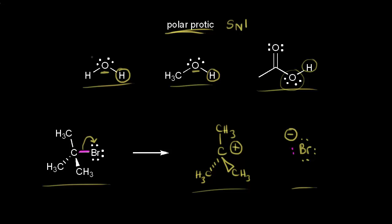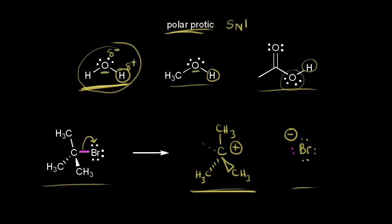If we're using a polar protic solvent such as water, water can stabilize both the cation and the anion. For our carbocation, carbon has a positive charge on it. Looking at water, the oxygen has a partial negative charge since oxygen is more electronegative than hydrogen, and the hydrogen would have a partial positive charge. The negative portion of the molecule — the oxygen — would interact with the positive charge on our carbocation. The partially negative oxygen with its two lone pairs of electrons will help to stabilize our carbocation.